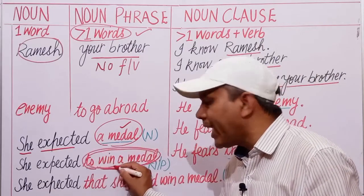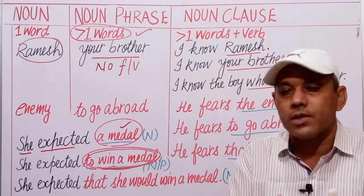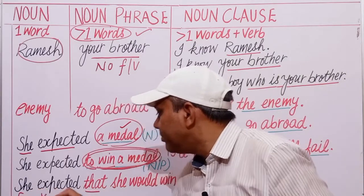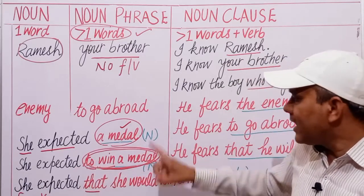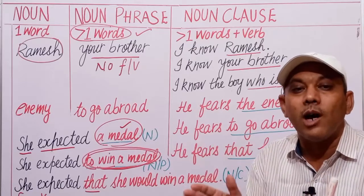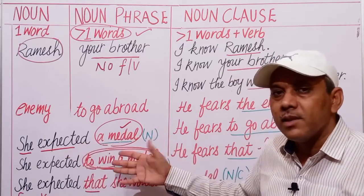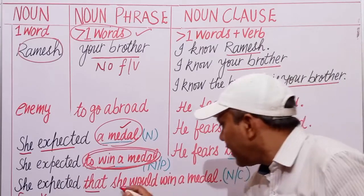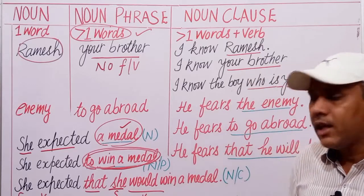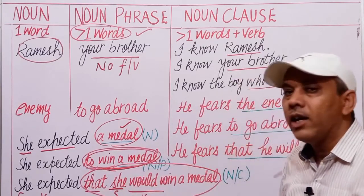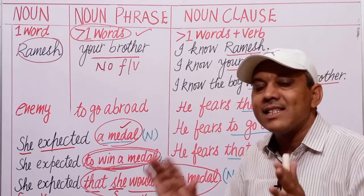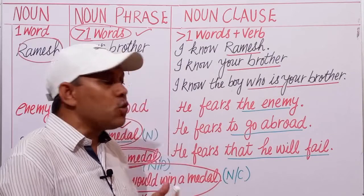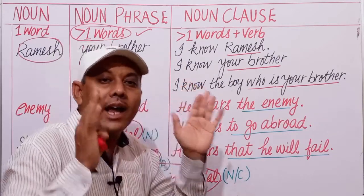In the third sentence, let us extend this phrase into a clause. For example: 'She expected that she would win a medal.' Here we have a subject-verb combination — 'that she would win a medal' is a subordinate clause acting as a noun in this sentence. That is why this is known as a noun clause. We can replace the noun phrase and noun clause with the word 'something': she expected something, she expected a medal, she expected to win a medal, she expected that she would win a medal.